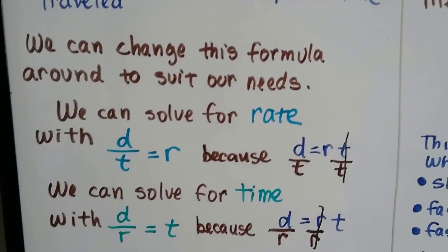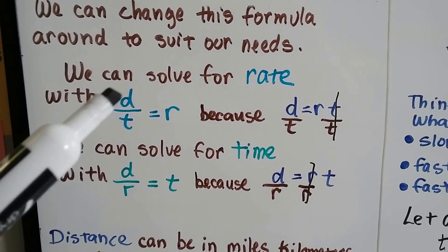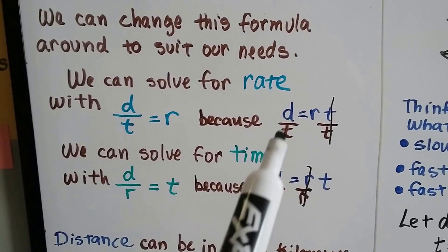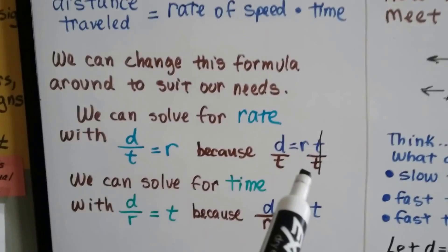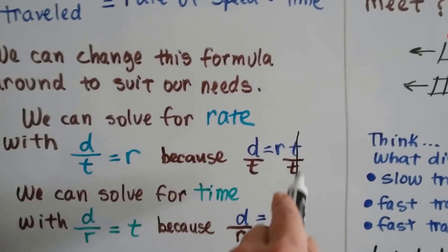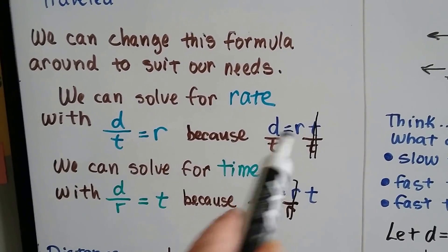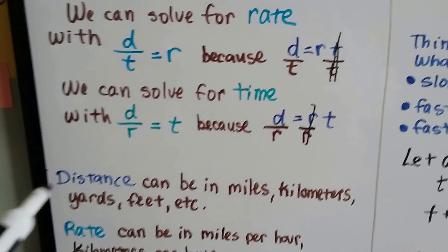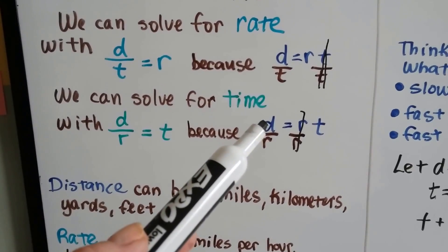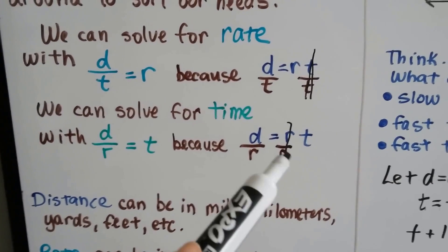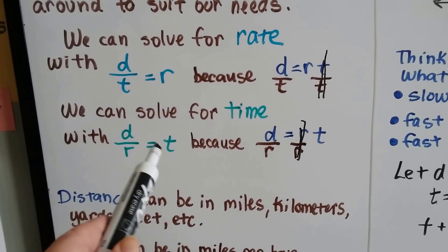We can change this formula around to suit our needs. We can solve for rate with d over t, distance divided by time equals rate, because d equals rt divided by t cancels the t. We can solve for time with distance divided by rate equals time. We take d equals rt, divide both sides by r, and that eliminates the r, leaving d over r equals t.